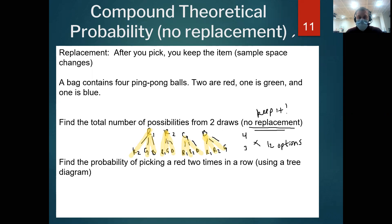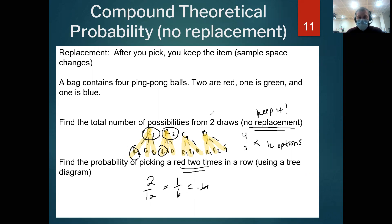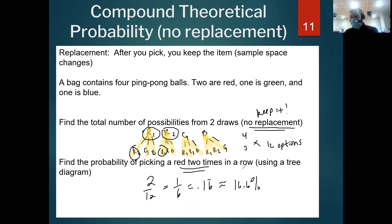Find the probability of picking a red two times in a row without replacement. Looking at the tree diagram: red then red — there's one, and there's two. Only two combinations result in two reds. So that's 2 out of 12 = 1/6 = 0.166 repeating = 16.6%. Instead of a 25% chance with replacement, keeping the first ball decreases the probability — harder to pick another red if you can't pick the one already in your hand.